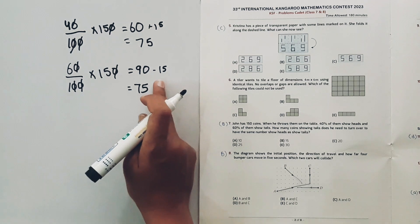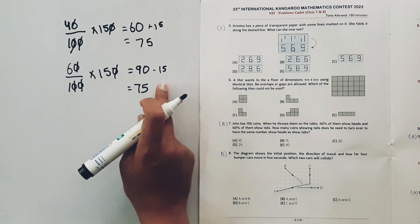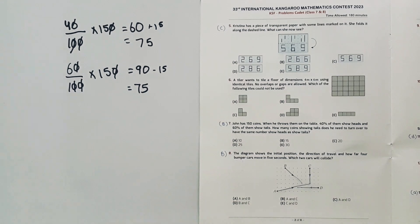So we are turning over 15 coins to have the same number of heads and tails. The answer is option B. We need to turn over 15 coins to have the same number of show heads and show tails.